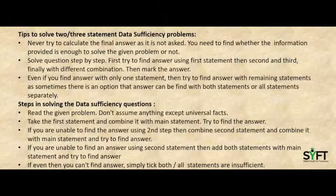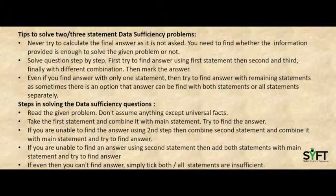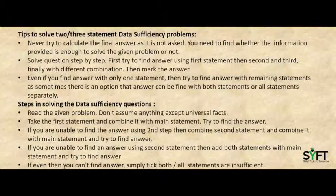Here are a few basic steps to follow while solving data sufficiency questions. Read the given problem. Don't assume anything except universal facts. Take the first statement and combine it with the main statement and try to find the answer. If you are unable to find the answer, combine the second statement with the main statement and try to find the answer. If you are still unable, then add both statements with the main statement and try to find the answer — this is also applicable for a three-statement data sufficiency problem. If even then you can't find the answer, mark that both or all statements are insufficient to find the answer.